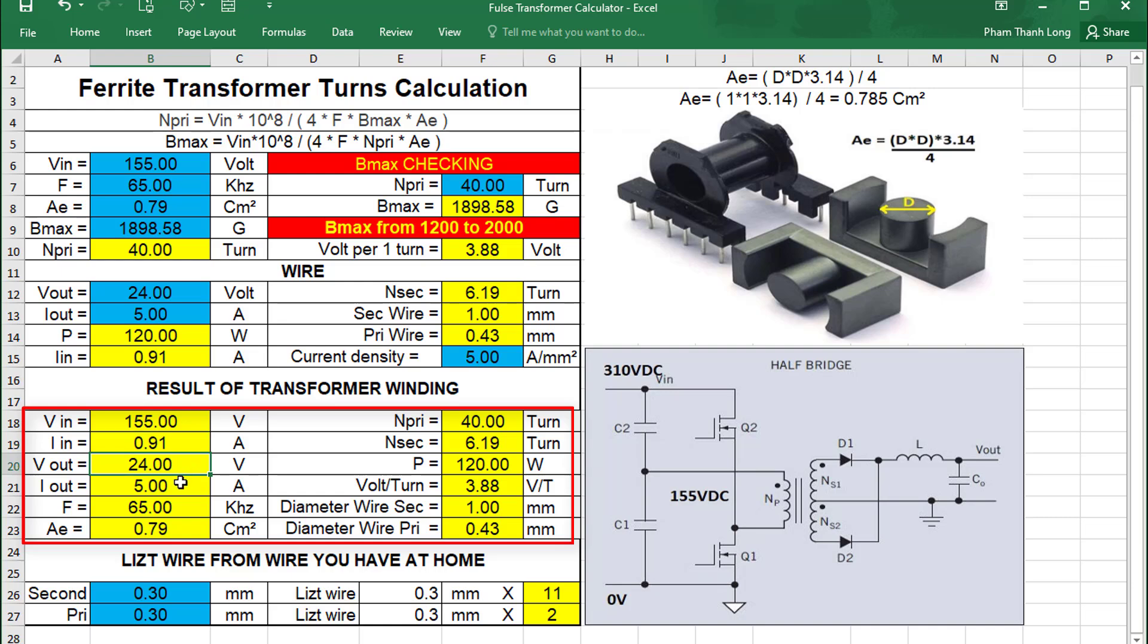We have voltage, current, number of turns of primary wire, diameter of primary wire, number of turns of secondary wire and diameter of secondary wire.